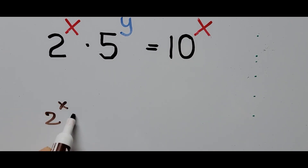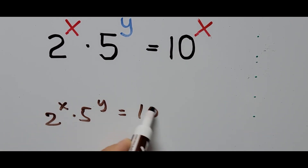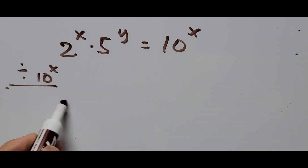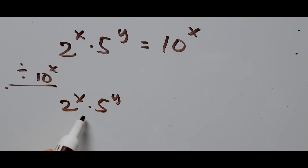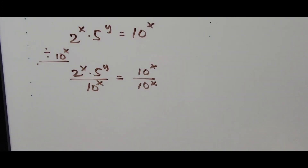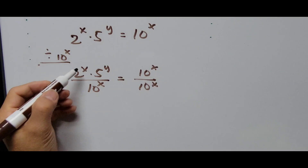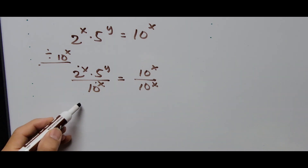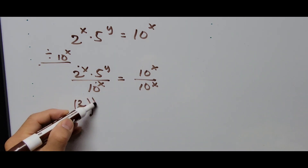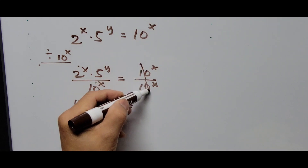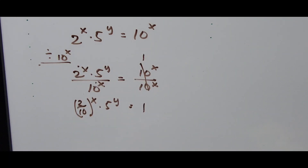So: 2 to the power of x times 5 to the power of y equals 10 to the power of x. We divide the whole equation by 10 to the power of x. That gives us 2^x times 5^y divided by 10^x equals 10^x divided by 10^x. On the left side, since 2 and 10 share the same exponent x, we combine them: this becomes (2/10)^x times 5^y. The right side becomes 1.